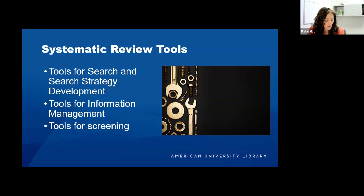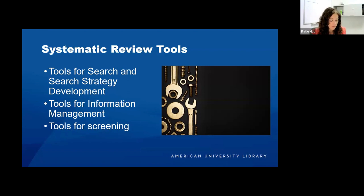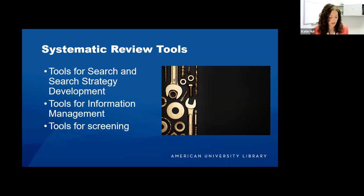For managing information, Zotero is a citation manager used quite a bit. You can use Zotero in combination with R applications to help you dedupe, including one called the Automated Systematic Search Deduplicator. You can also use EndNote or Mendeley; the AU Library is best equipped to help with Zotero. For screening, Covidence was created specifically for systematic reviews, as was Distiller SR — both require a subscription. There's also Rayyan, which is free. CISREV is a newer tool for data extraction and screening that is highly customizable, with a good free version.